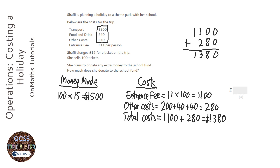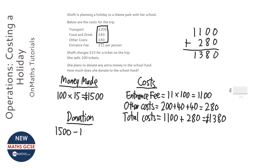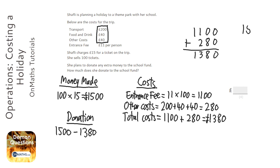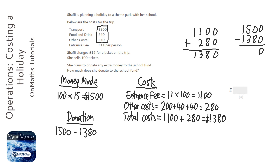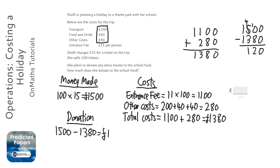To work out how much she's donating, be really explicit with what you're working out. The donation is the money coming in take away the money going out. So we take 1380 from 1500: 10 take away 8 is 2, 4 take away 3 is 1, and 1 take away 1 is 0. That's going to be 120 pounds.